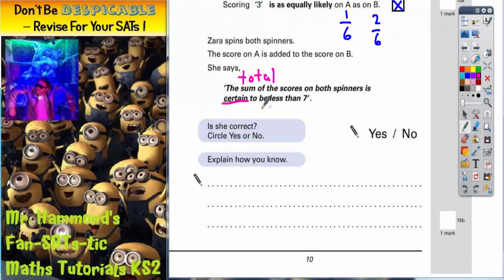So if the highest possible total is six, she is certain to get a total less than seven. Because she can't get any higher than six. So is the sum of the scores certain to be less than seven? Yes, it is.